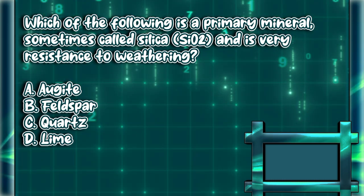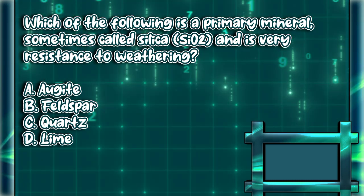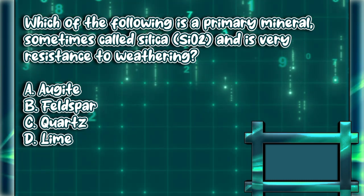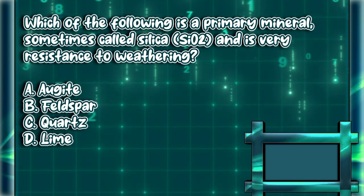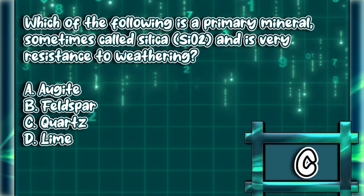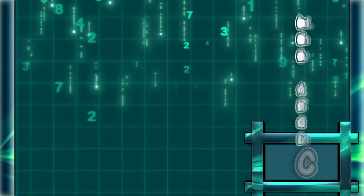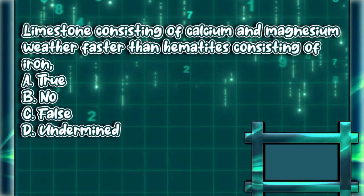Which of the following is a primary mineral, sometimes called silica, and is very resistant to weathering? A) Augite, B) Feldspar, C) Quartz, D) Lime. The answer is letter C.